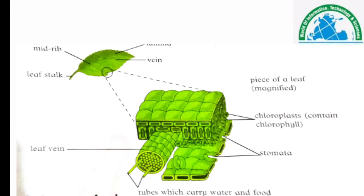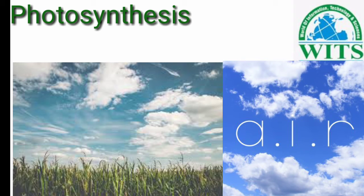Recap: جو centre میں line ہوتی ہے اسے midrip کہتے ہیں، shady اور shiny part کو lamina، نسوں کی طرح والی چیزوں کو vein، اور start میں stock کی طرح والی چیز کو leaf stalk کہتے ہیں۔ Magnified leaf میں chloroplast ہوتا ہے جس میں chlorophyll ہوتا ہے، leaf veins جو water اور food carry کرتی ہیں، اور stomata جن کے ذریعے gases exchange ہوتی ہیں۔